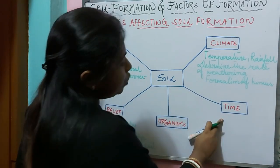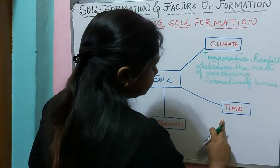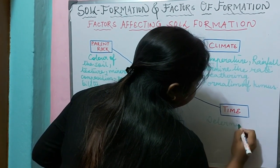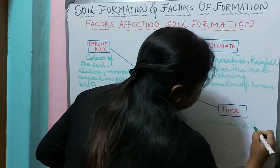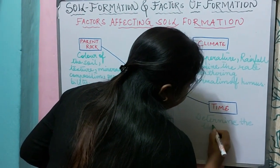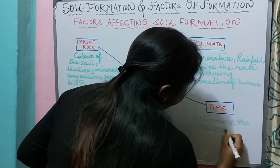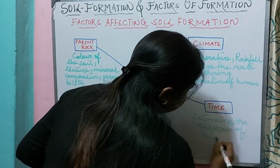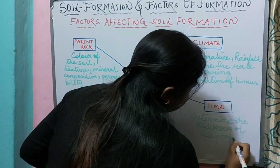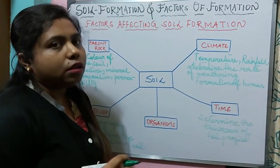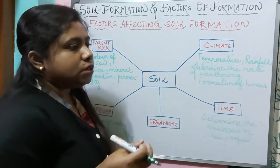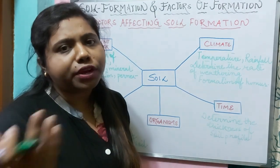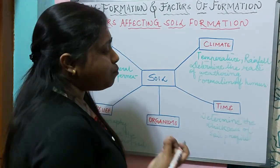The fourth factor is time. Time will determine the thickness of the soil profile. We already know that just to form one centimeter of soil it takes hundreds of years, so time is a very important factor in determining the thickness of the soil profile.